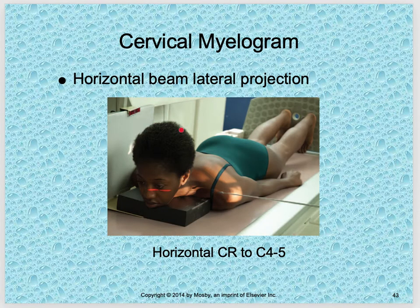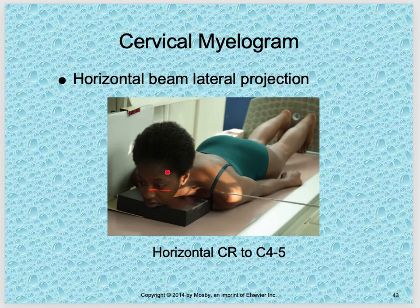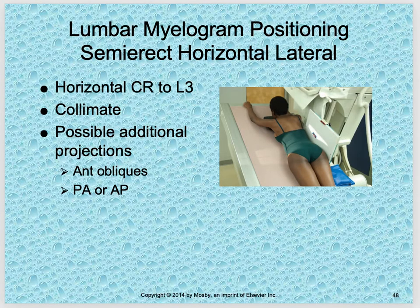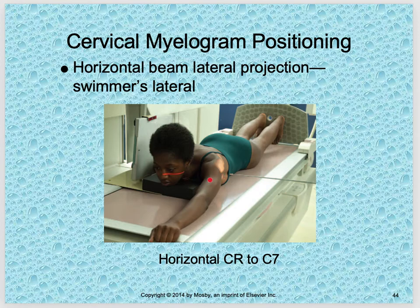For a cervical myelogram, contrast is still injected at L4-L5 and the patient is positioned Trendelenburg so the contrast flows toward the cervical spine. A cross-table lateral C-spine is performed with a horizontal central ray to C4-C5 to visualize the contrast. They then proceed to CT or MRI for follow-up images — you're just verifying that the contrast material is in the cervical canal.